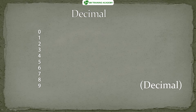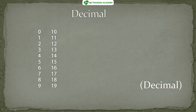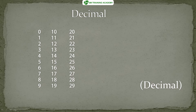Let's look into the decimal numbering system that is most widely used by humans. The decimal number starts from zero, and we know that we have 10 possible numbers: 0, 1, 2, 3, 4, 5, 6, 7, 8, and 9. After 9, we have numbers like 10, 11, 12, 13, 14, 15, 16, and so on.